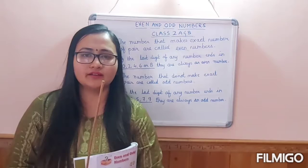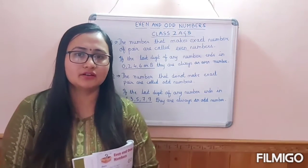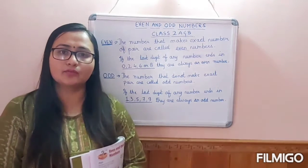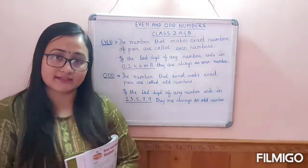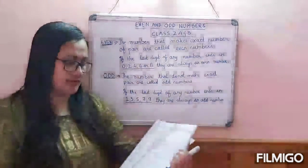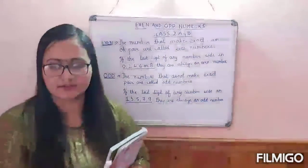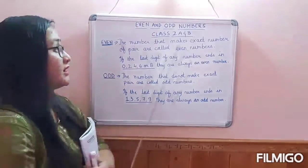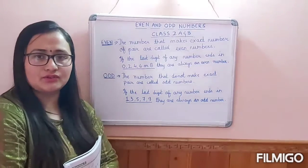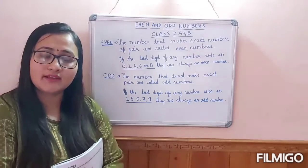A very warm and pleasant good morning to all my dear students of class 2A and B. Today I am here to start a new chapter in your maths. This video will be for both sections 2A and 2B. So the new chapter is even and odd numbers. It is there in your book, page number 42. This you might have heard in your previous classes, like in class 1, UKG, and so on. In this we will learn about it in more detail.